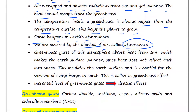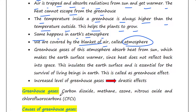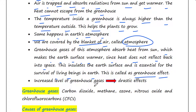The greenhouse gases of this atmosphere, which surround our Earth, absorb heat from the sun, which makes the Earth's surface warmer. Since heat does not reflect back into space, this insulates the Earth's surface and is essential for the survival of living beings on Earth.